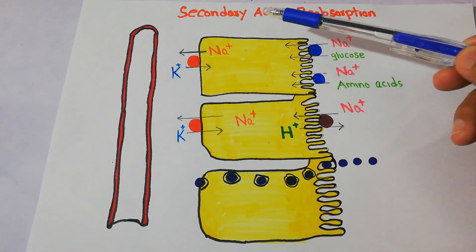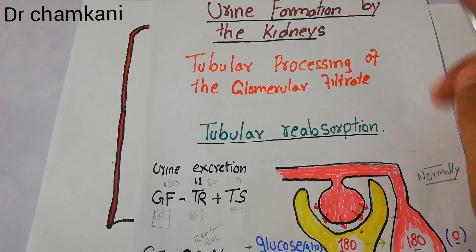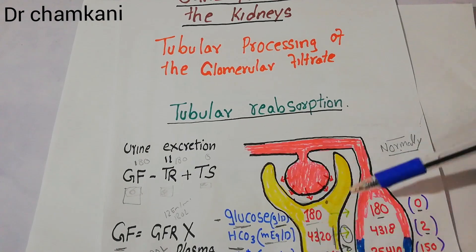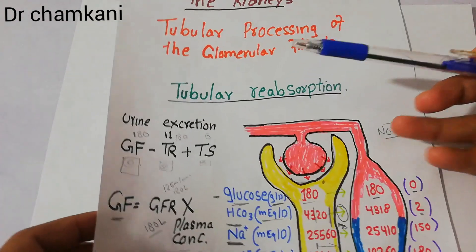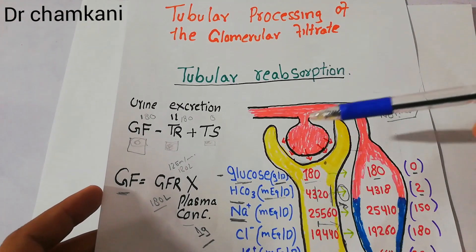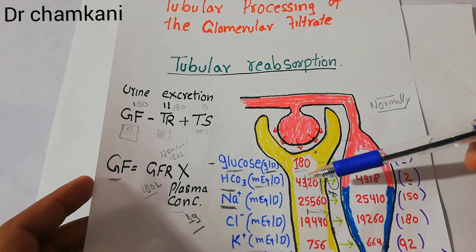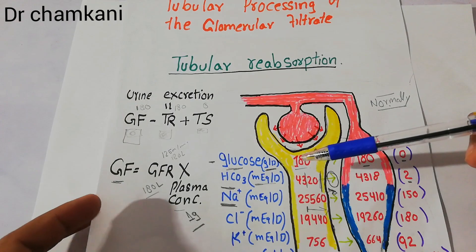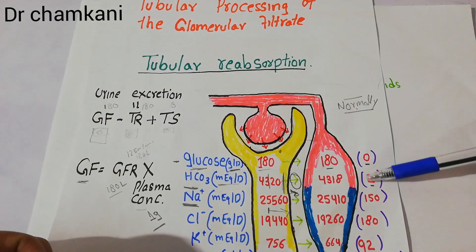To understand the story you need to know some of the previous episodes of this drama. Inside the kidneys, in the process of urine formation, there is filtration of blood in the nephrons. Once filtration has occurred, the filtrate along with substances enters the proximal tubule of the nephron. From the proximal tubule, some substances are reabsorbed into the blood — that is tubular reabsorption — and some are excreted into the urine.